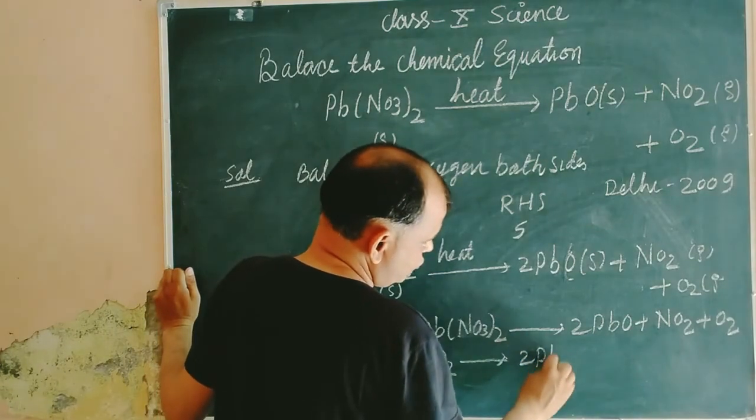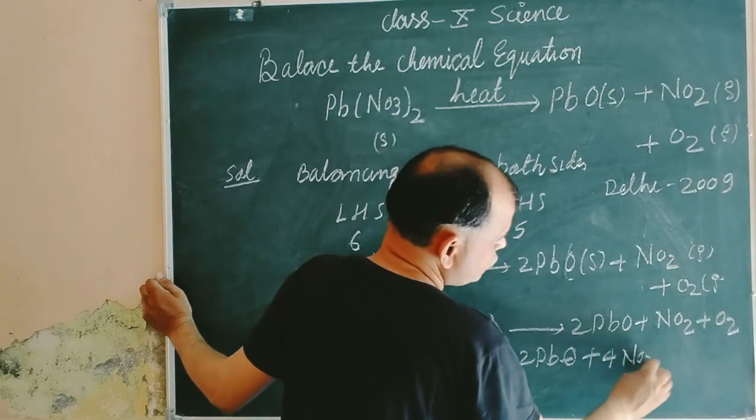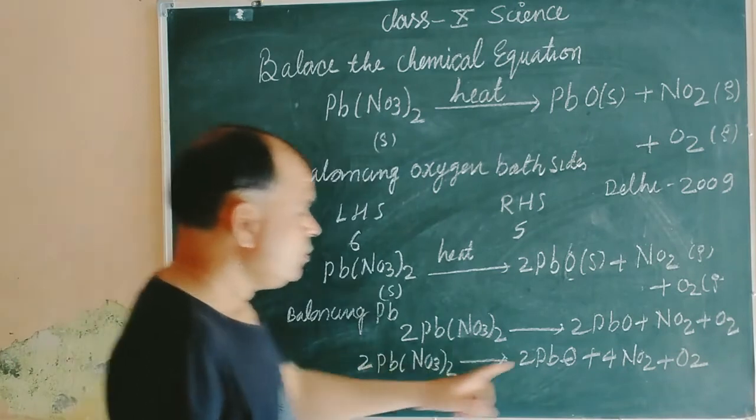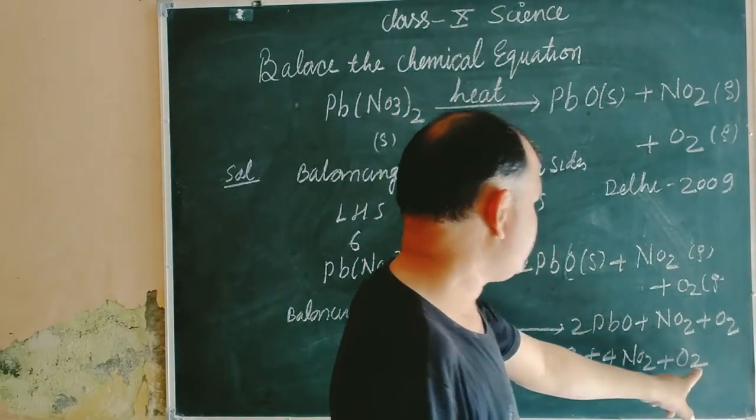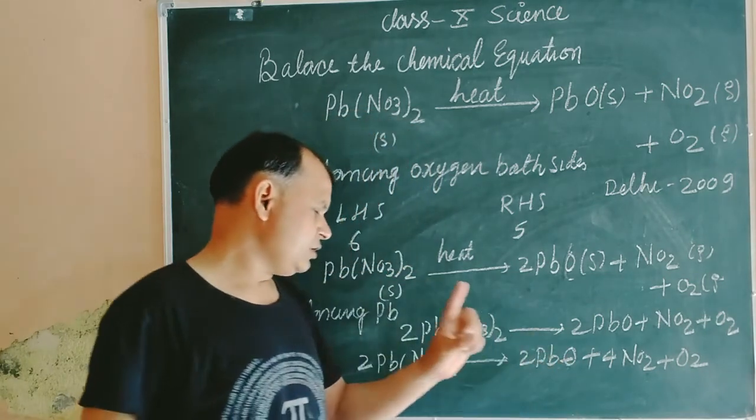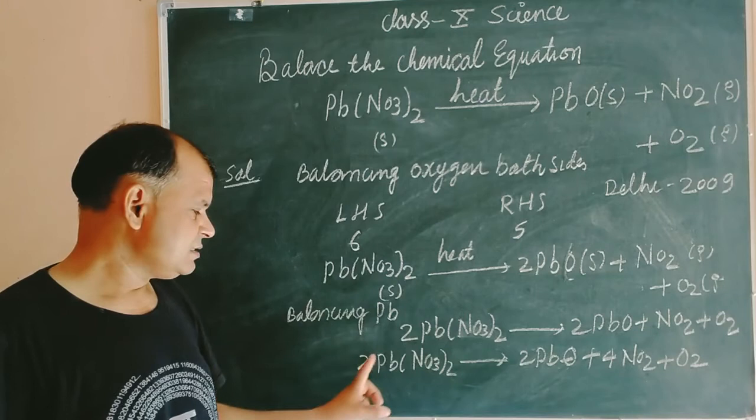heats, 2 PbO plus 4 NO₂ plus O₂. Here 4 to the 8, 8 plus 10, 10 plus 12, and here, 3 to the 6, 6 to the 12.